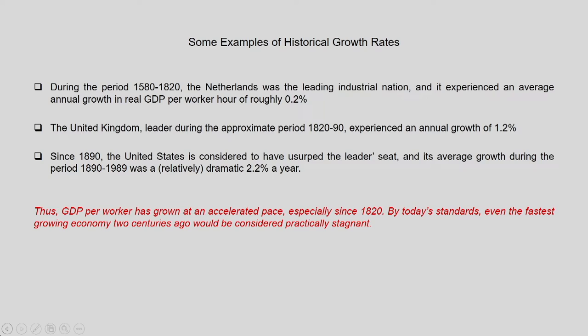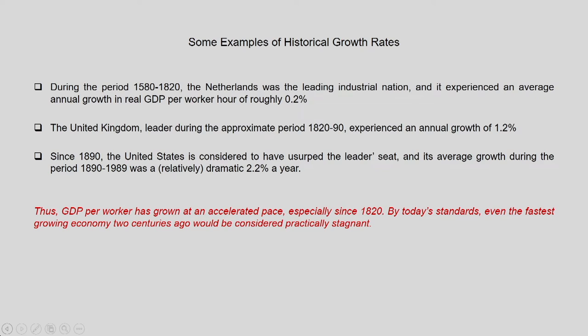An annual growth rate of 2 percent in per capita GDP does not appear very impressive, but it has enormous potential if sustained. Simon Kuznets' calculations showed that at a 2 percent rate, a nation's per capita GDP would double in about 35 years — roughly half a person's lifetime. This means modern economic growth enables people to enjoy vastly improved living standards compared to earlier generations.